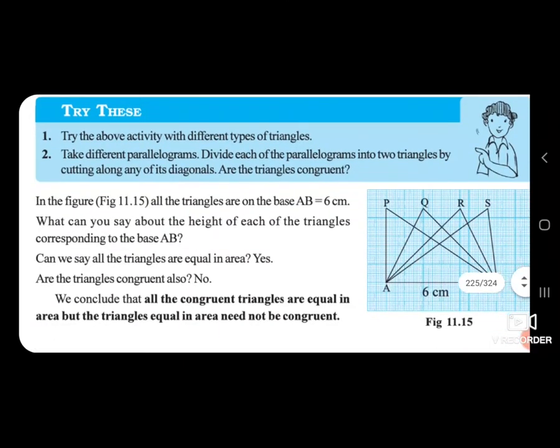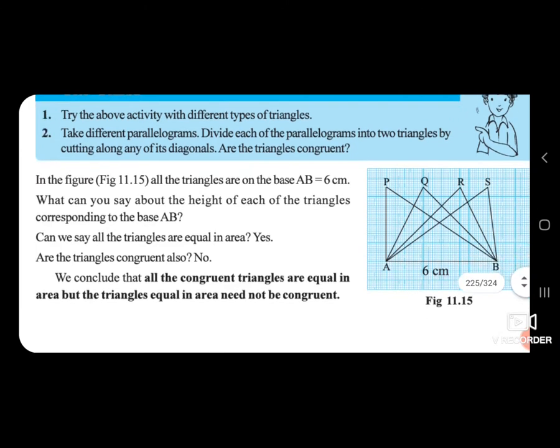In figure 11.15, all the triangles are on the base AB, which is equal to 6 centimetres. What can you say about the height of each of the triangles corresponding to base AB? Can we say all the triangles are equal in area? Yes. Are all the triangles congruent also? No.